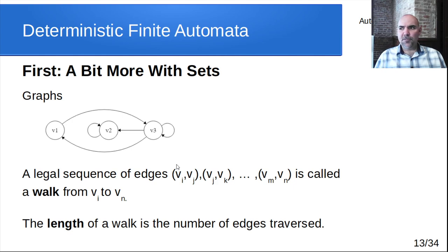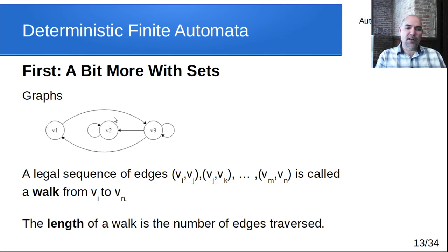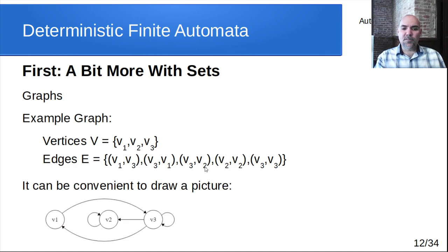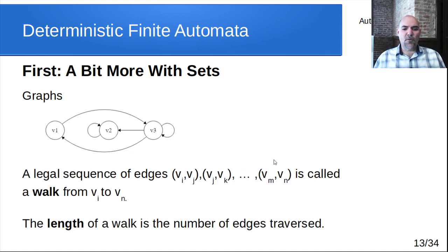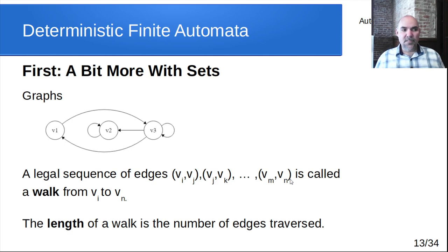A few final definitions before we get to DFAs. A legal sequence of edges — where they connect like dominoes, so where one ends is where the next begins — is called a walk from one vertex to another. It just has to be a legal sequence of edges; we can't use edges that don't exist in our set. The length of a walk is the number of edges in that sequence. Note that a walk is a sequence, not a set, so no curly braces around it.